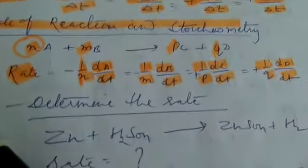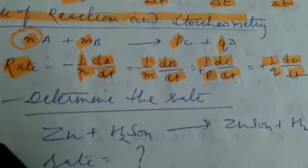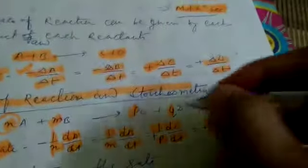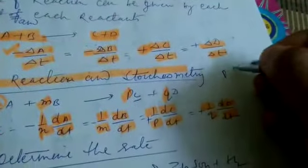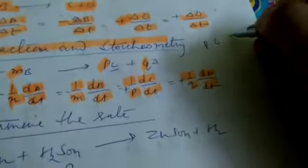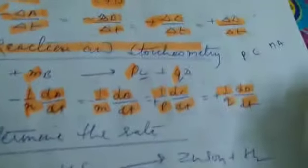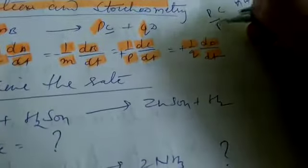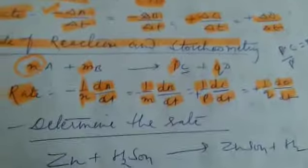We are dividing the rate of reaction by coefficient to equalize all the reactants and products. Here you can see that if P molecules are taken of C and N molecules are taken of A, then if we divide P by P and N by N, then it will cancel out and both the reactants will be equal. That is why we are dividing the rate of reaction by their coefficients.